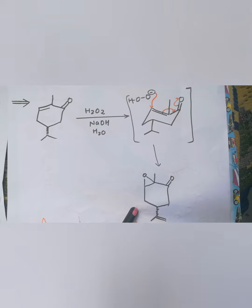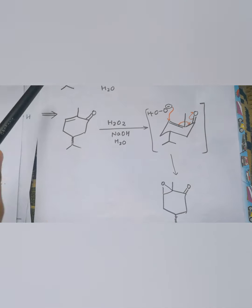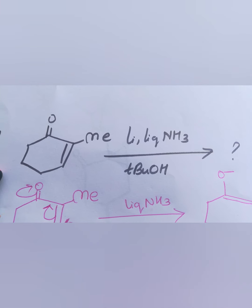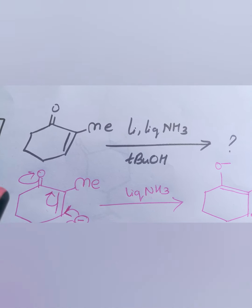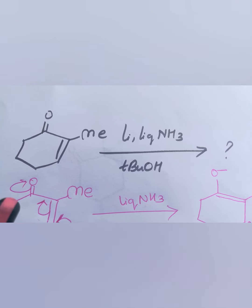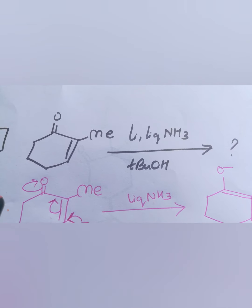Our next question: the reagent is lithium in liquid ammonia and in alcohol. We all know what it is. It is known as Birch reduction. We have done this in our reagent series part three.